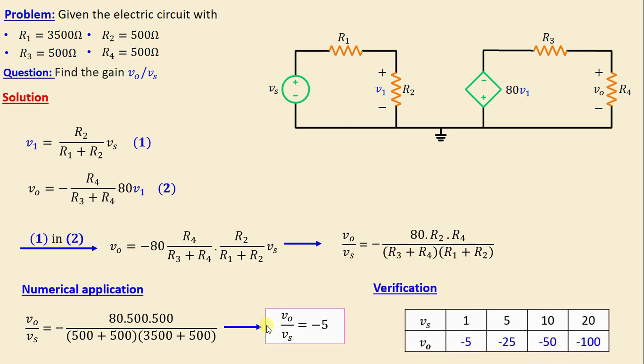different values of vs and calculate the output voltage vo. We can see here: when vs = 1V, vo = -5V; when vs = 5V, vo = -25V;